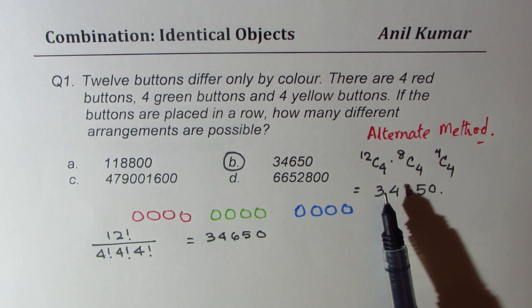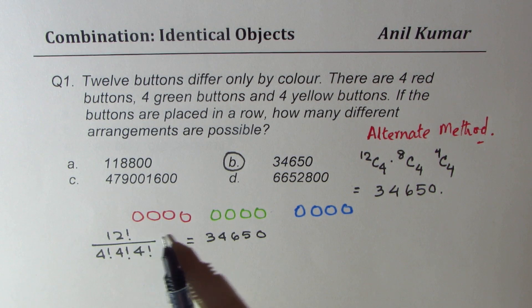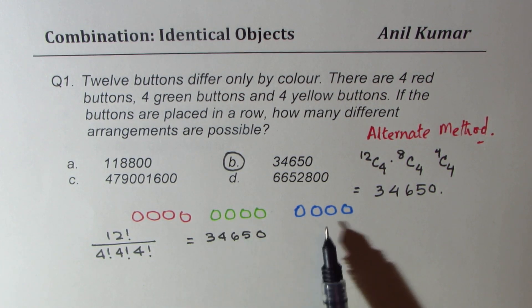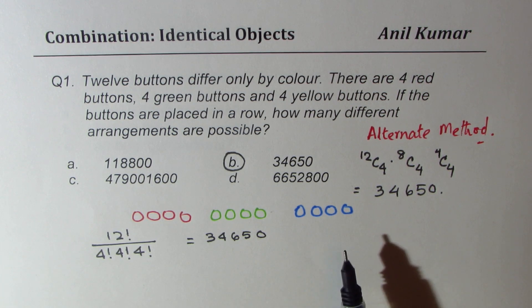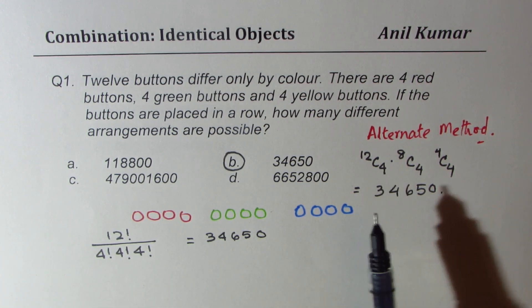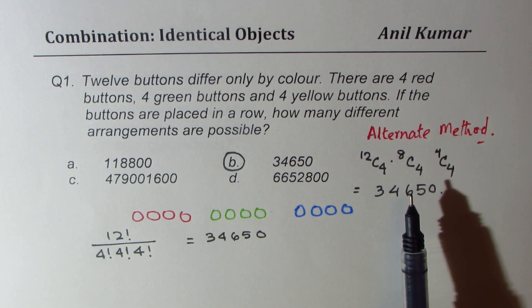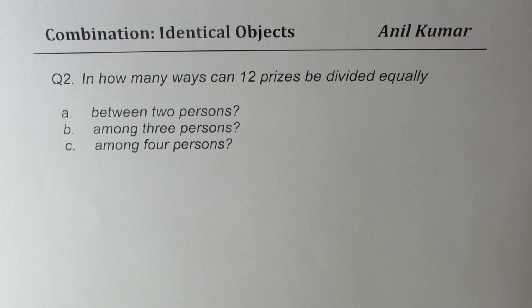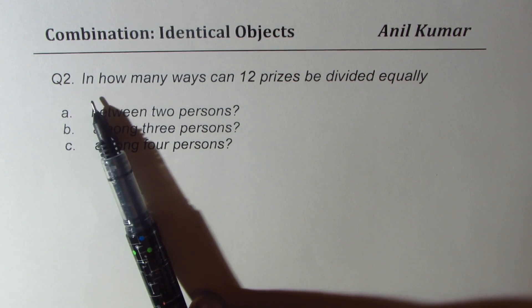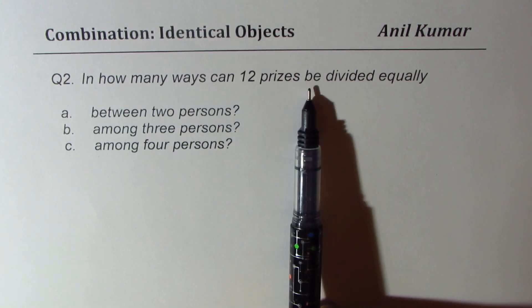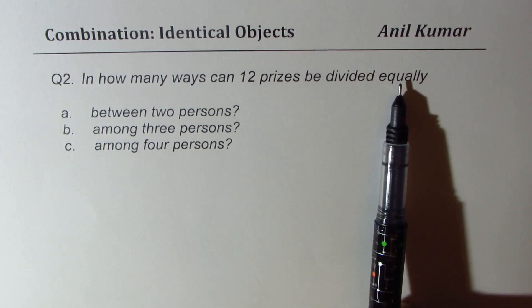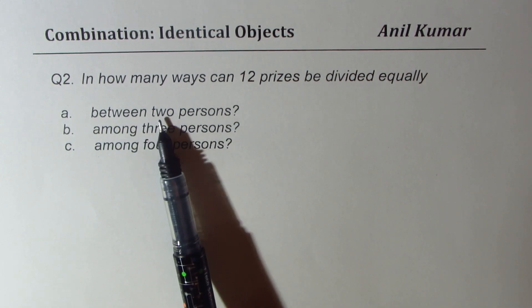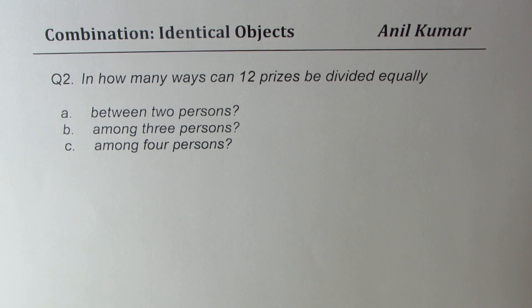Do you understand the method? So what we have done here is that we are thinking about first distributing these four, then those, and then the next lot. So in this fashion, we can actually deal with identical objects with just combination formula as we did now. I hope that makes sense. Now the answer is clear. Let's get to question number 2 and see how our method helps to answer such questions. Now question number 2 is, in how many ways can 12 prizes be divided equally?